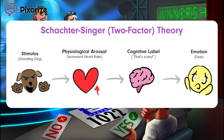Note that cognitive labeling is the primary difference in the Schachter-Singer theory as compared to the James-Lange theory. While James-Lange theory holds that physiological arousal alone produces emotion, Schachter-Singer says that you need a second factor: cognitive labeling.